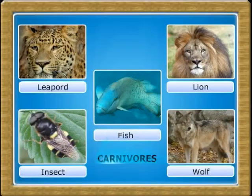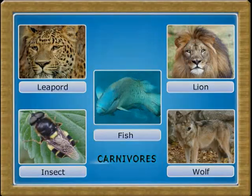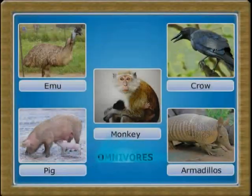The animals that consume plant foods are known as herbivores. The animals that consume other animals are called carnivores. Animals which consume both plant and animal food are termed omnivores.